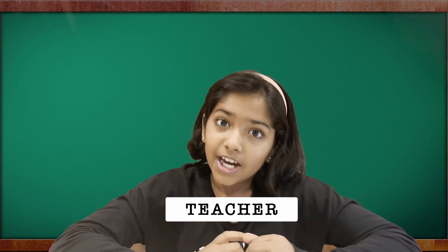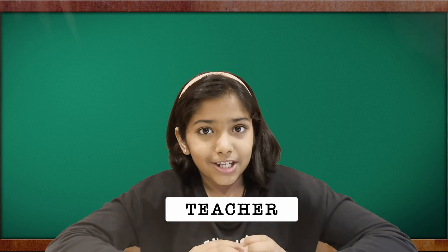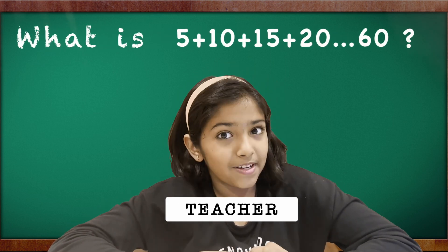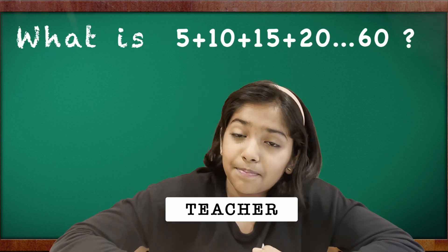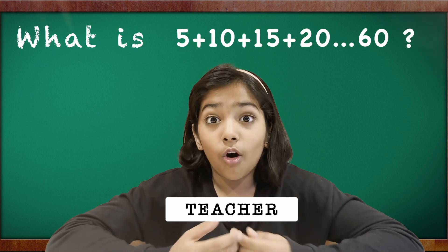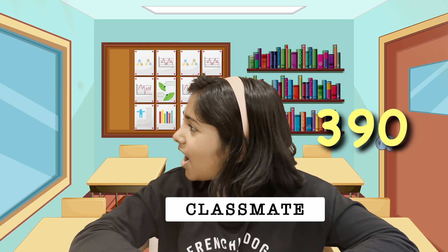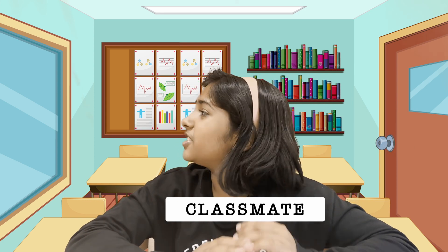Let me ask you a harder one. What is 5 plus 10 plus 15 plus 20 plus 25 all the way up to 60? Hmm... 390. Wow! What? How did you do that?